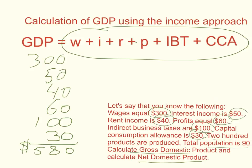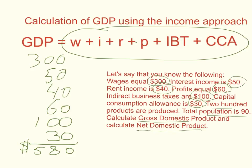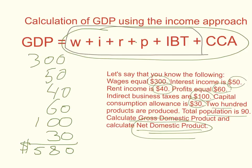The other question is: what is net domestic product? Net domestic product is the first five of these components — wages, interest, rent, profit, and indirect business taxes — so all of them except CCA, all of them except depreciation. Adding the first five together gives $550, which is the same as $580 minus the $30 CCA. So net domestic product equals $550.